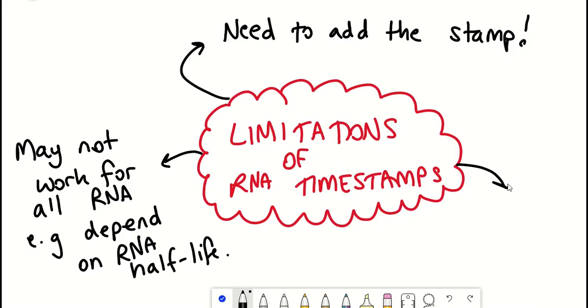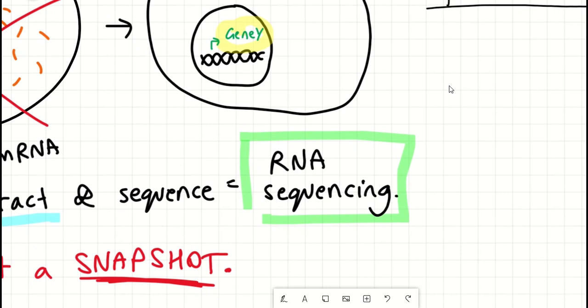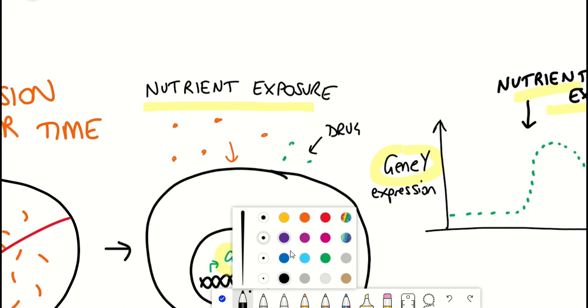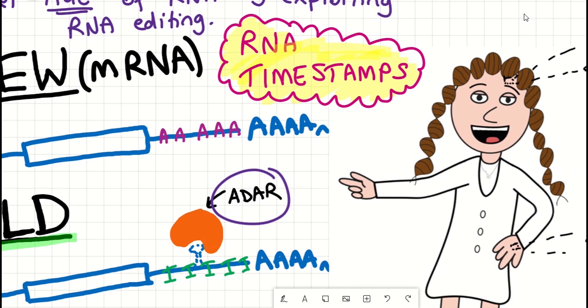Nonetheless, the RNA timestamps presented in this publication have great potential for widespread use. For example, it could be useful for studying the diversity of responses to different cellular perturbations, and there are quite a lot of cellular perturbations. And so it'll be exciting to see how these RNA timestamps are used in future publications, and I'll be sure to keep a lookout.